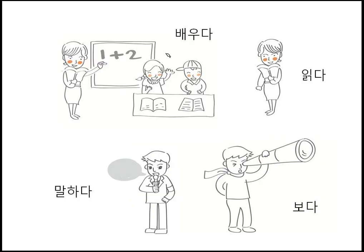배우다 means learn, 읽다 means read, 말하다 means speak, 보다 means see. The 요-forms of these basic forms are: 배워요, 읽어요, 말해요, 봐요.